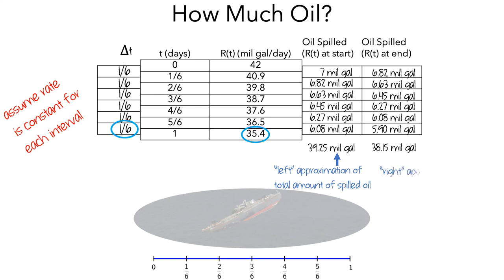This gives a right approximation of the total amount of spilled oil, because we're using the rates that corresponded to the right endpoint of each interval. Both of these are approximations of the total amount of spilled oil, and we don't have a way of knowing whether one is more accurate than the other.